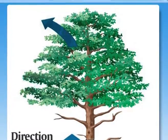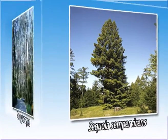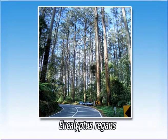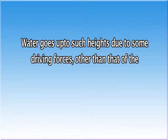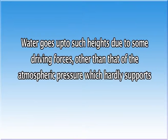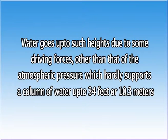The upward movement of water from the xylem terminals in the root towards the stem, branches, and leaves is called ascent of sap or translocation of water. The movement of water sometimes covers a distance of more than 100 meters, as in the case of the tallest trees like Sequoia sempervirens in California and Eucalyptus regnans in Australia. Therefore, water goes up such heights due to some driving forces other than atmospheric pressure, which hardly supports a column of water up to 10.3 meters.